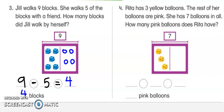Rita has three yellow balloons. The rest of her balloons are pink. She has seven balloons in all. How many pink balloons does Rita have? Alright, there's something happening with balloons. She has a lot of balloons, some color, another color. So let's read it again. Rita has three yellow balloons. The rest of her balloons are pink. She has seven balloons in all. So let's look at the picture here.